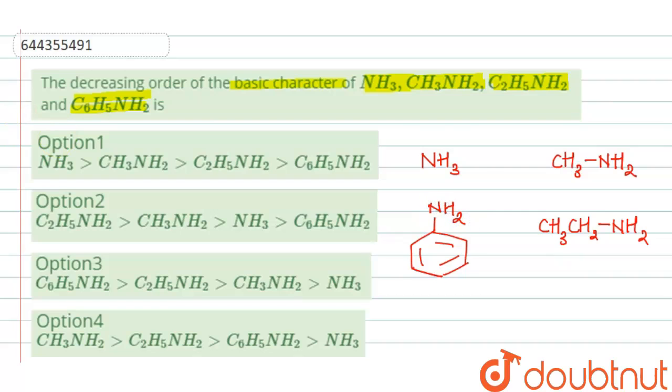So because of the presence of lone pair of electrons on nitrogen atom, they behave as Lewis bases. Lewis bases are those which have tendency to donate their lone pair of electrons.